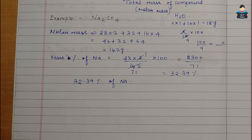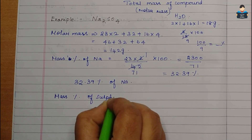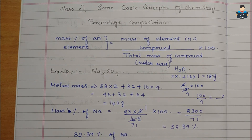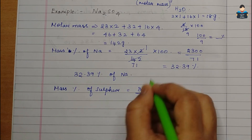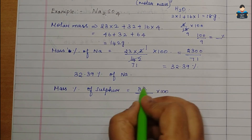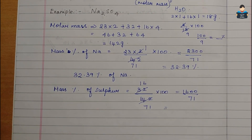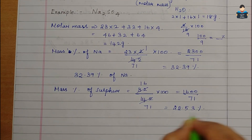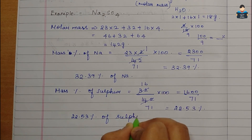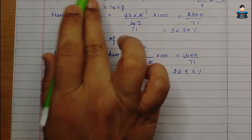Next, mass percentage of sulfur. There is one sulfur atom with atomic mass 32. So mass percentage of sulfur = 32/142 × 100 = 1600/71 ≈ 22.53%. So sulfur is 22.53% present in sodium sulfate.